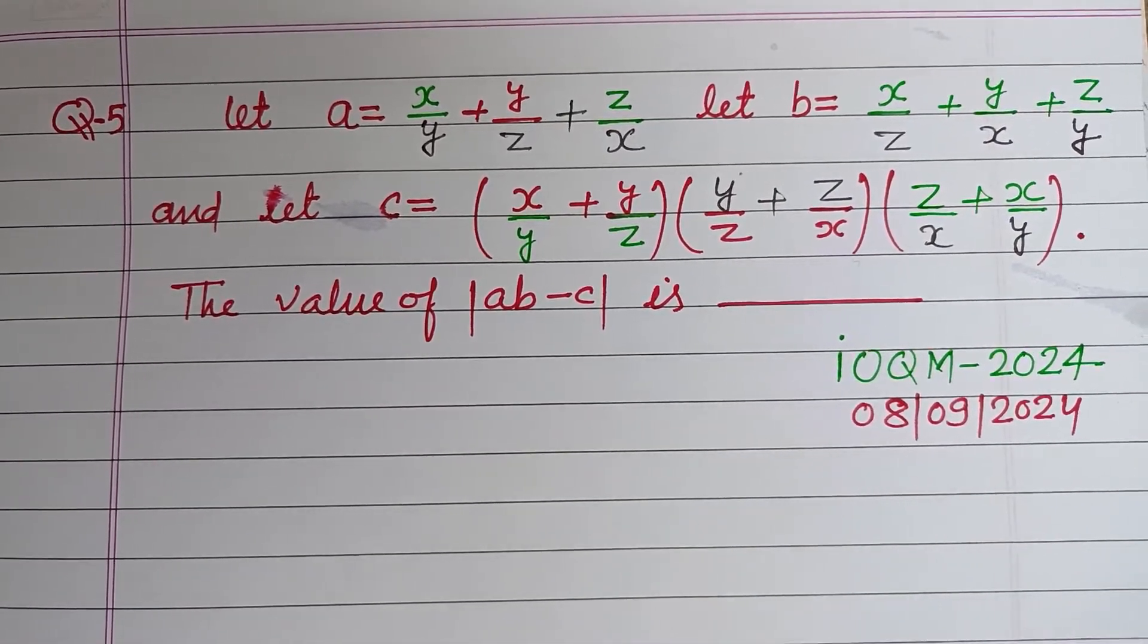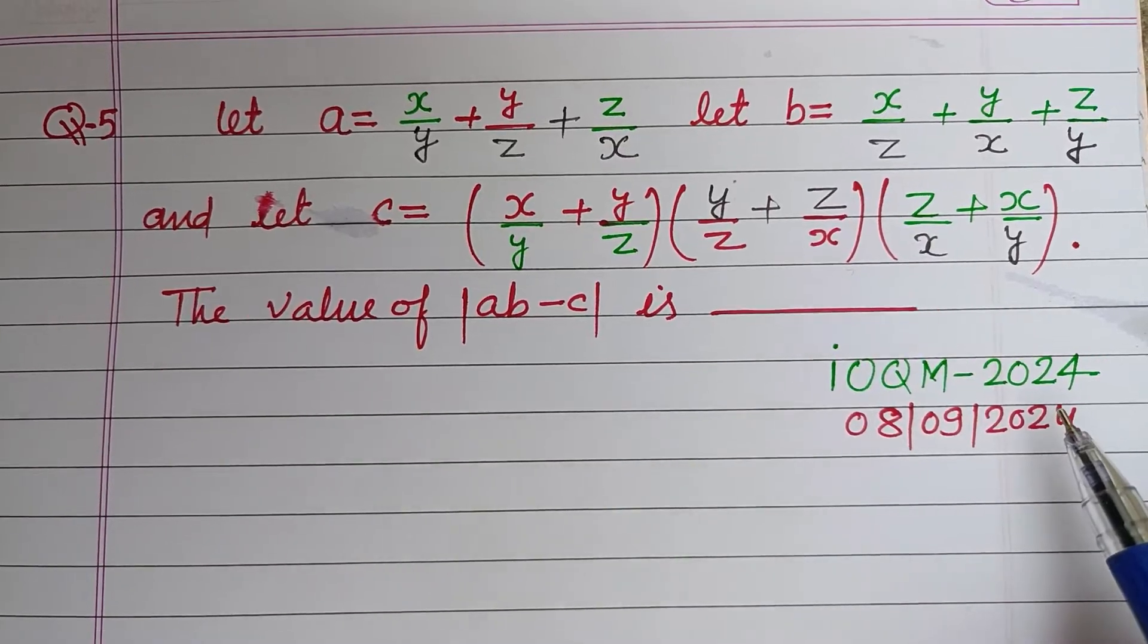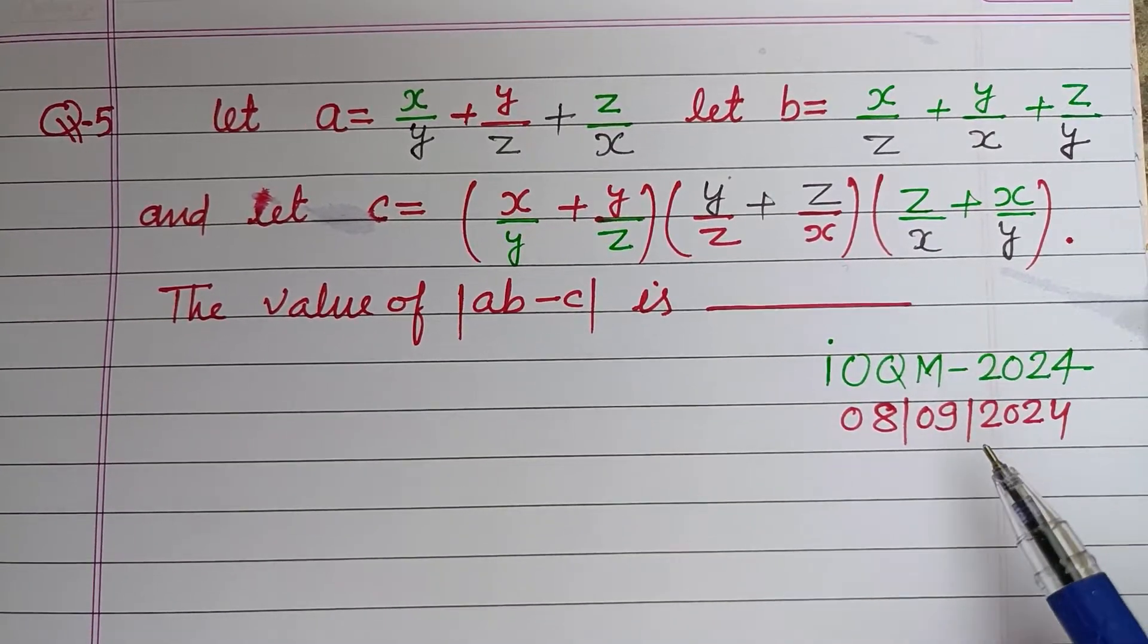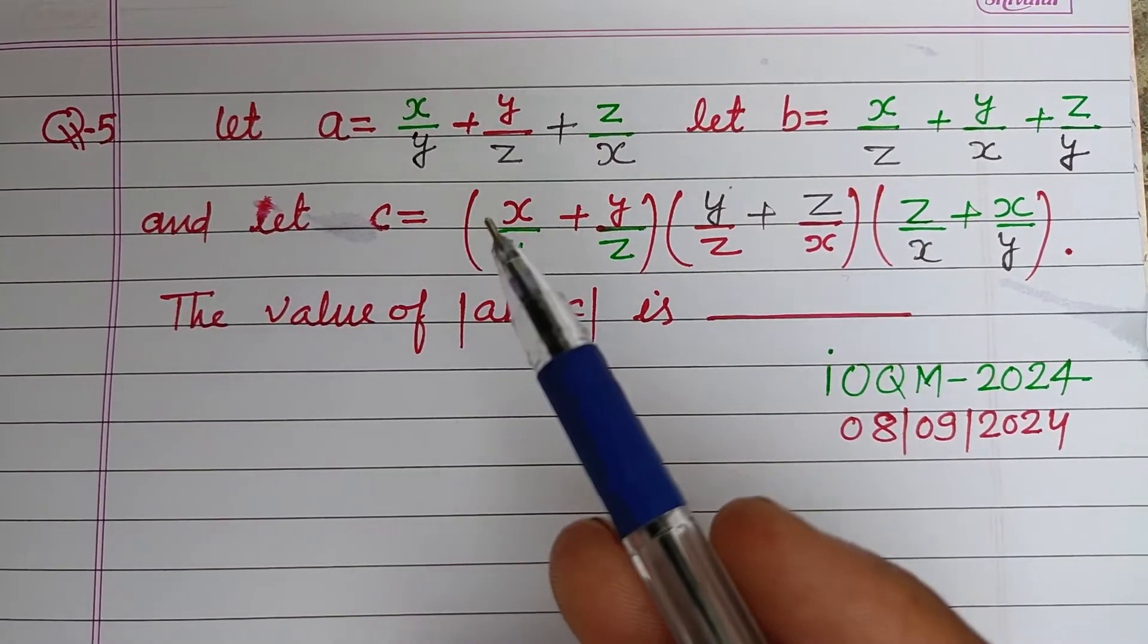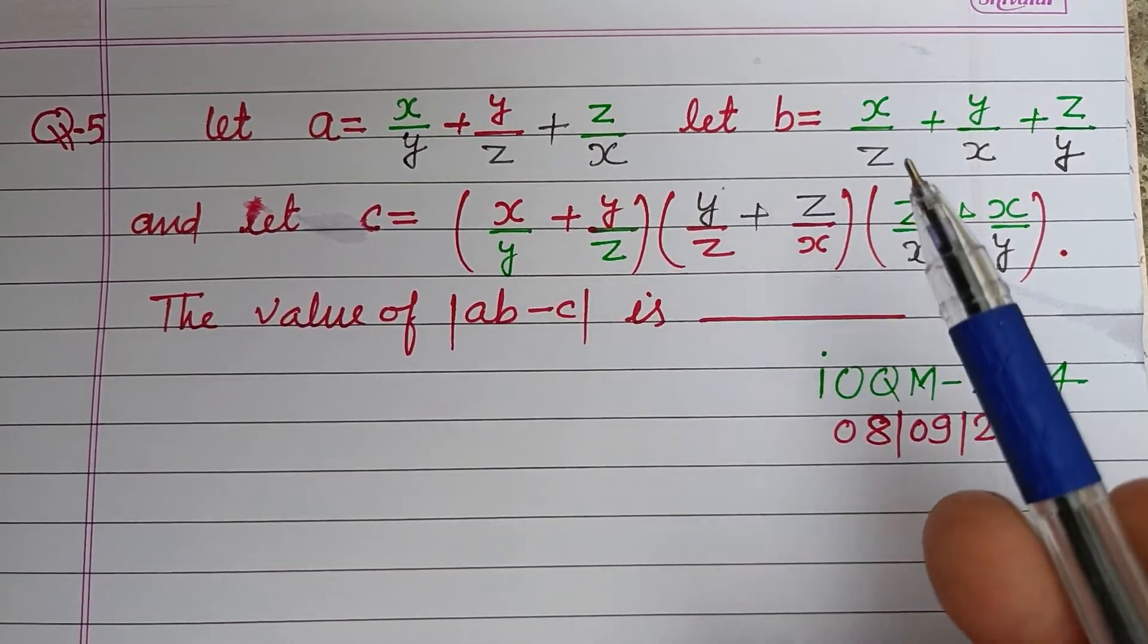Hello viewers, warm welcome to this YouTube channel. This is a question from IOQM 2024 held on 8 September 2024. Let a equal to x over y plus y over z plus z over x, and b equal to x over z plus y over x plus z over y.